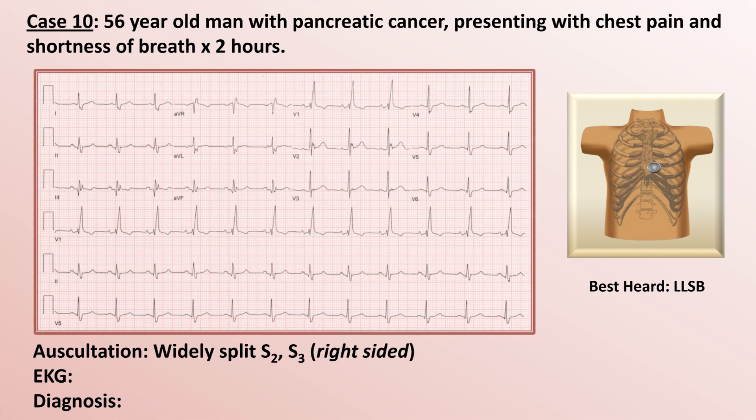Now the EKG. The rate is normal, around 75 beats per minute. There is a one-to-one correlation between P waves and QRS complexes, and the P wave axis is normal — upright in lead 2 and downgoing in AVR. Regarding duration, although the QRS duration may appear normal in some leads such as V3, it should always be measured in the lead where it appears longest. In this case, that is either V1 or V6.